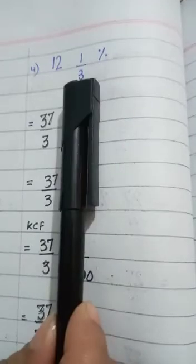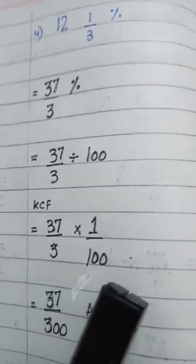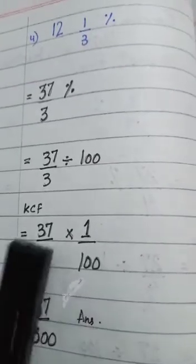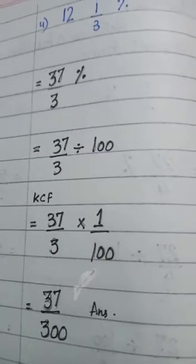The next question is 12 whole number 1 upon 3 percent. 12 into 3 is 36, plus 1 is 37, so we get 37 upon 3 percent. Percent means divided by 100, so we write 37 upon 3 divided by 100. We will use the KCF method: 37 upon 3 multiplied by 1 upon 100. Multiply: 37 into 1 is 37, and 3 into 100 is 300. So the answer is 37 upon 300.